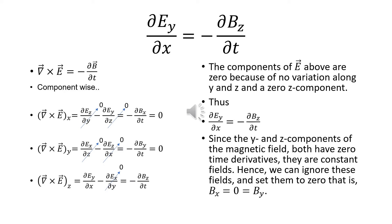We know curl of E equals minus ∂B/∂t. Component-wise, the x component of curl E is δEz/δy − δEy/δz = −∂Bx/∂t = 0. The y component is δEx/δz − δEz/δx = −∂By/∂t = 0. The z component is δEy/δx − δEx/δy = −∂Bz/∂t, where δEx/δy = 0. Thus we obtain δEy/δx = −∂Bz/∂t.